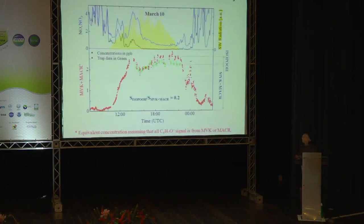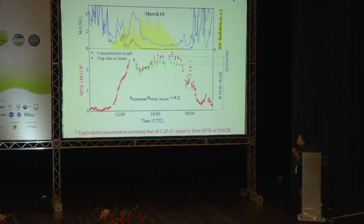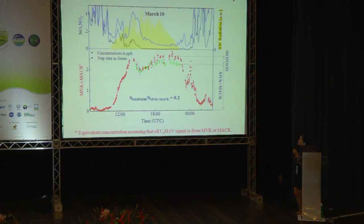Now I will show you some preliminary results. March 10th was one of the few very sunny days in the wet season. The top panel shows NO and NOx. During that day, during daytime, we see very high NOx concentration in the morning, and it goes to very low in the afternoon. Consistently, we see the equivalent MVK+MACR concentration — the cold trap data is in green and the non-trap data is in red. In the morning when NOx is high, those two datasets agree very well. However, when NOx level drops, these two datasets start to diverge, and this difference represents isoprene hydroperoxides.